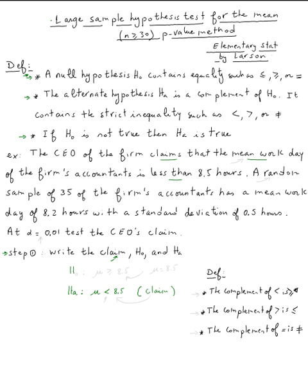To find the null hypothesis statement, we take the complement of mu less than 8.5. The complement of strictly less is bigger or equal. Similarly, the complement of strictly greater is less or equal, and the complement of equal is not equal. So the null hypothesis is mu greater or equal to 8.5.